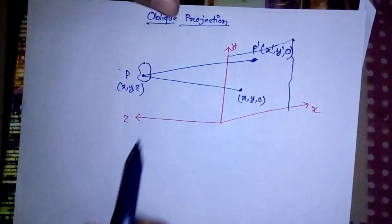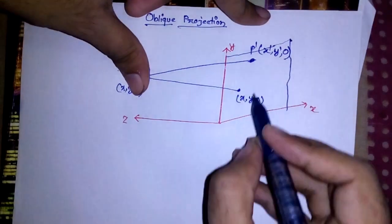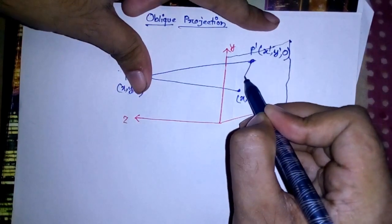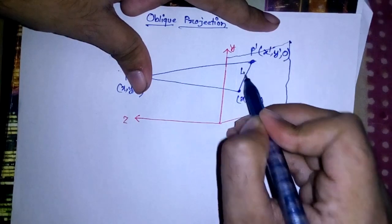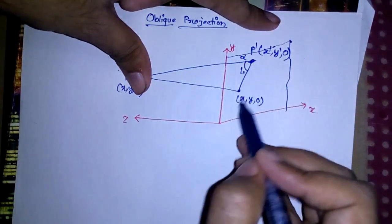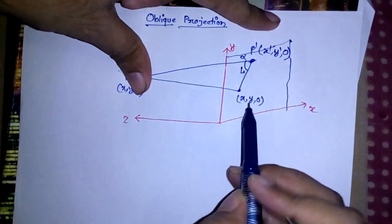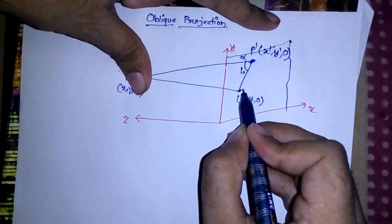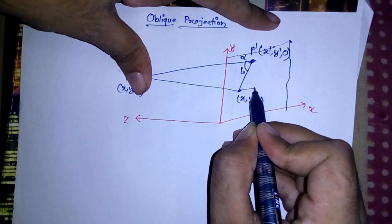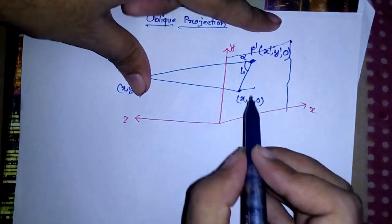Now let's say that this distance is L and this is making an angle alpha with the viewing plane. Now how to compute this X dash from this X value? If I go this M distance here I will get this X dash, and if I go N distance here...